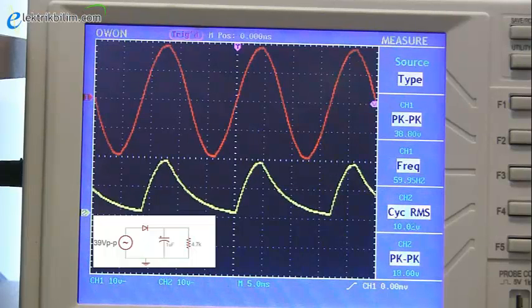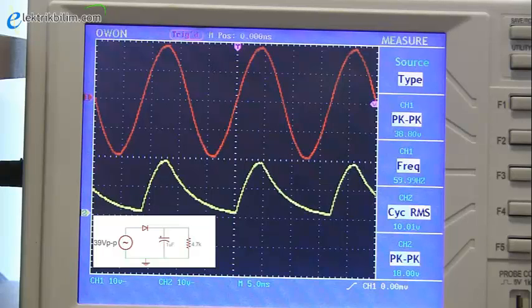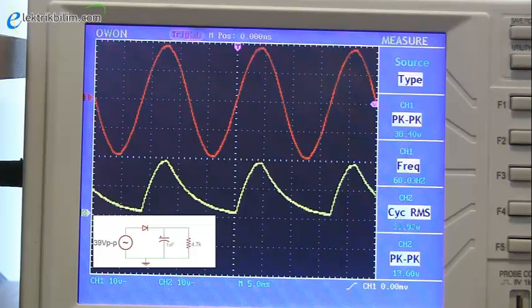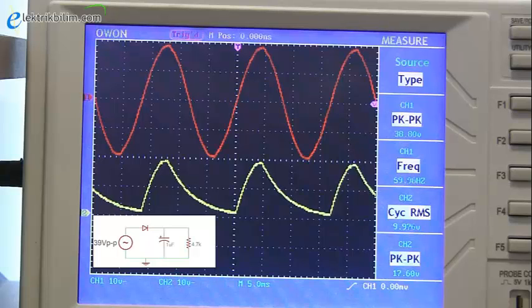What you're seeing here is that when the AC input is positive, the diode allows current to flow through, so the capacitor gets charged. But as soon as the input voltage starts dropping off, the diode blocks the backwards flow of current, and the only energy source left is that tiny 1uF capacitor. And as you can see, it gets drained pretty quickly, even under low loads.